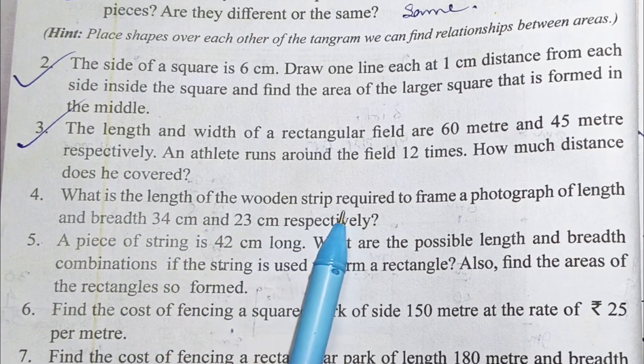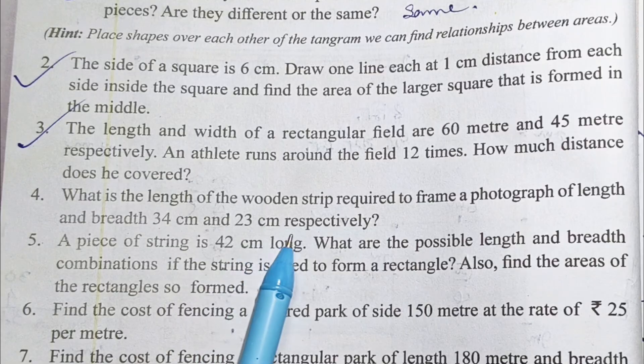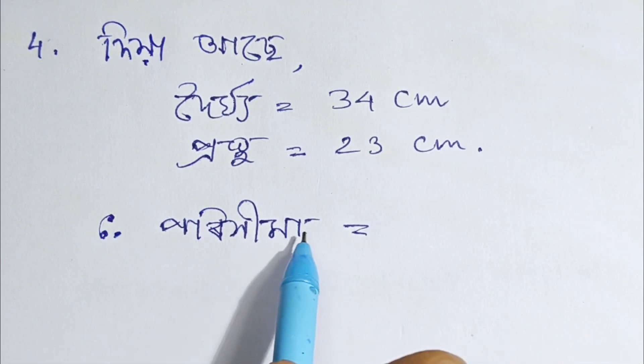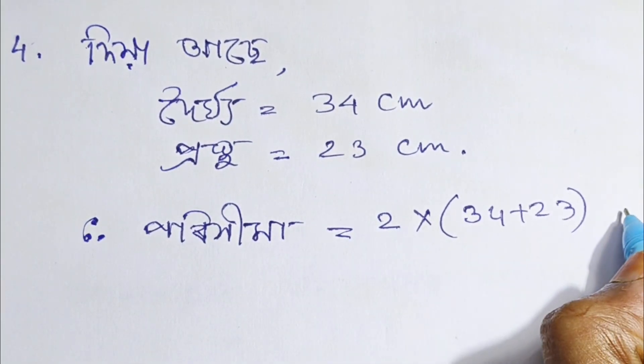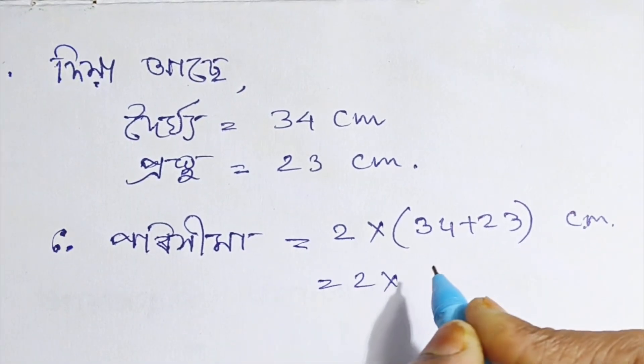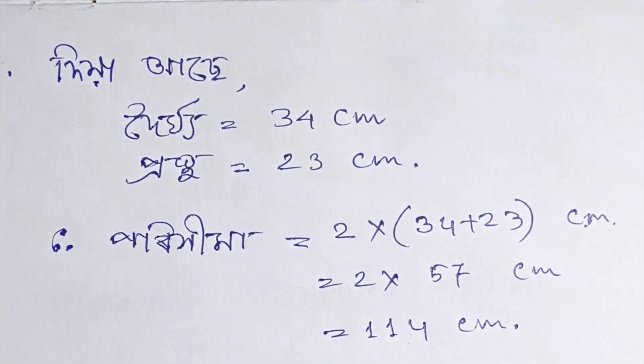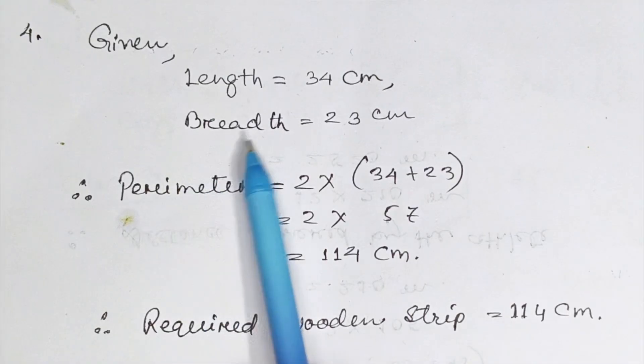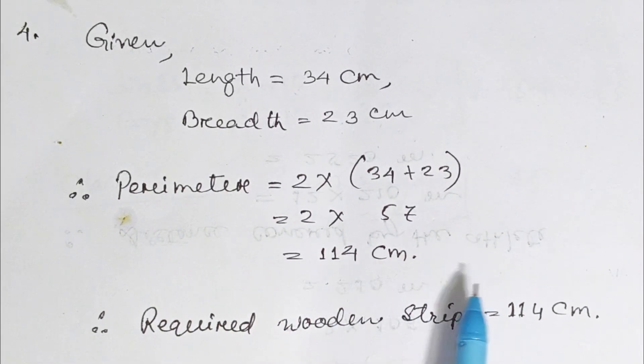What is the length of the wooden strip required to frame a photograph of length and breadth 34 cm and 23 cm respectively? The perimeter is 2 times 34 plus 23 cm, equals 2 times 57 cm, equals 114 cm. Therefore, the required wooden strip is 114 cm.